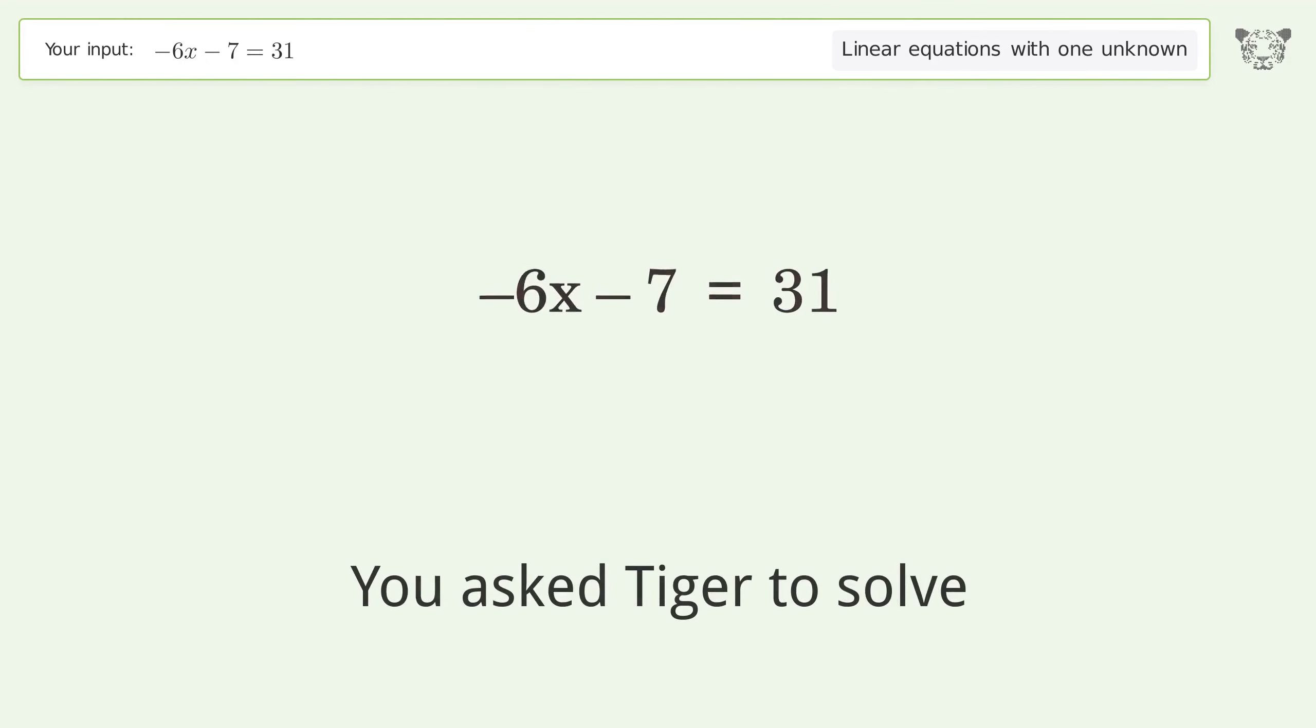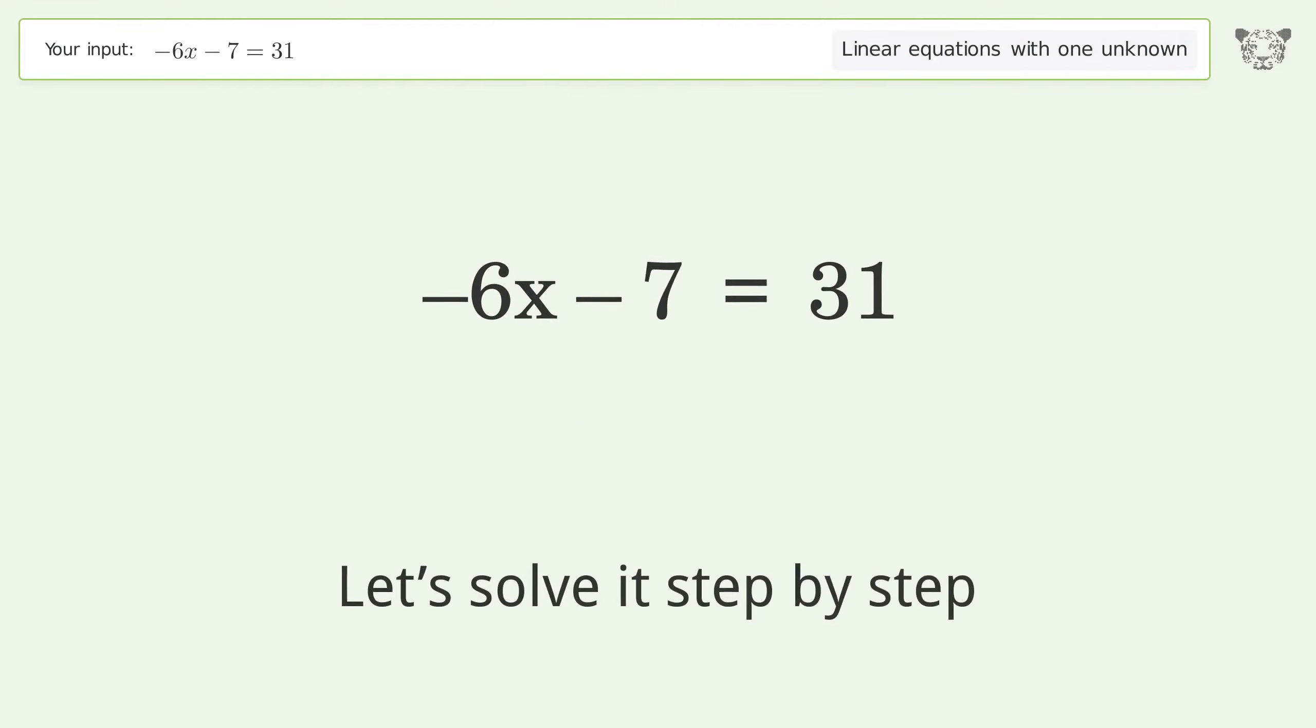You asked Tiger to solve this. It deals with linear equations with one unknown. The final result is x equals negative 19 over 3. Let's solve it step by step.